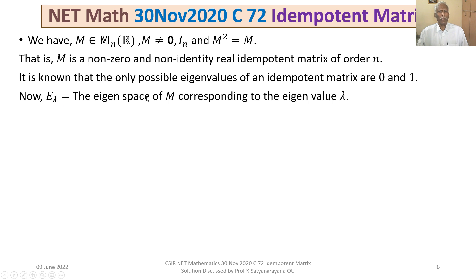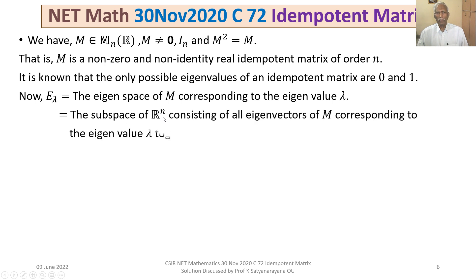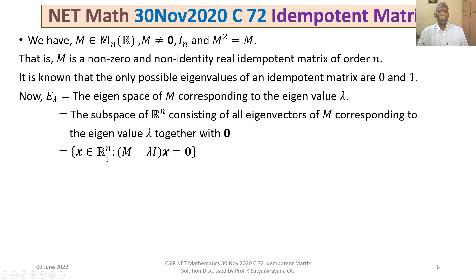The eigenspace of M corresponding to eigenvalue λ, denoted E_λ, is by definition the subspace of ℝⁿ consisting of all eigenvectors of M corresponding to eigenvalue λ together with the zero vector. It is the set of all x ∈ ℝⁿ such that (M − λI)x = 0. Such x are the eigenvectors.